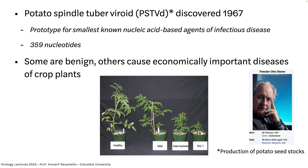The first viroid discovered is called potato spindle tuber viroid, PSTVD. It was discovered in the production of potato seed stocks in 1967 by Theodor Otto Diener, who just died last month at the age of 102. I always wanted to interview him and never got the chance.